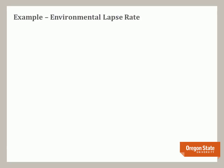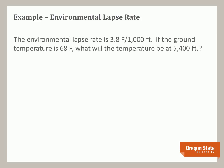So now let's use these concepts. First, let's use the environmental lapse rate. Remember, this is how the temperature of the atmosphere changes as you move vertically to higher heights. Here's the question: the environmental lapse rate is 3.8 degrees Fahrenheit per thousand feet. If the ground temperature is 68 degrees Fahrenheit, what will the temperature be at 5,400 feet?